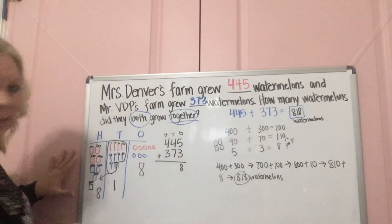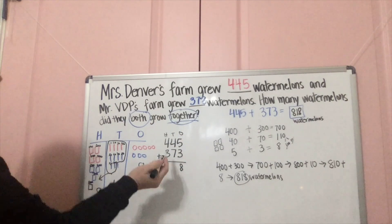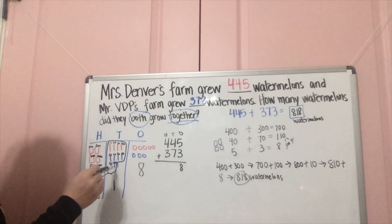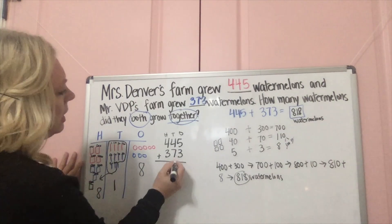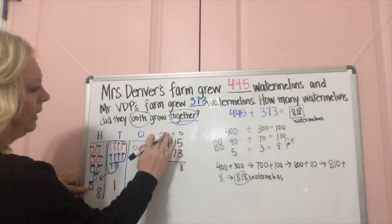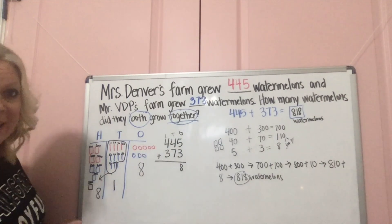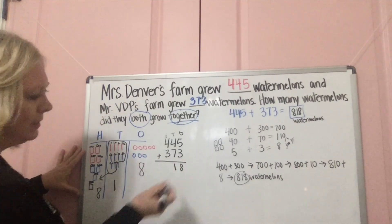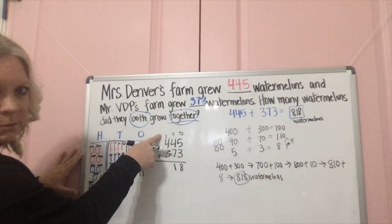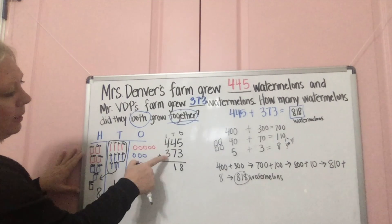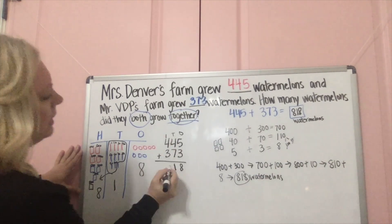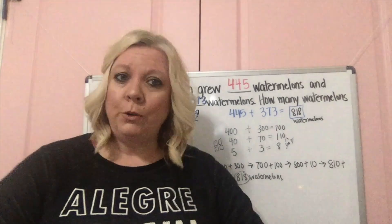We know 5 plus 3 is 8 — those are ones, no big deal — so we write 8 right here. In the tens you've got 70 and 40, and we know 70 plus 40 is 110. So we have to move the 100 over to the hundreds column — right up here — and you've got 10 left, which stays right there. That 10 is your remaining tens digit. Now add the hundreds: 400 plus 300 is 700, and don't forget the 100 you carried over — that makes 800. So the final answer is 818.